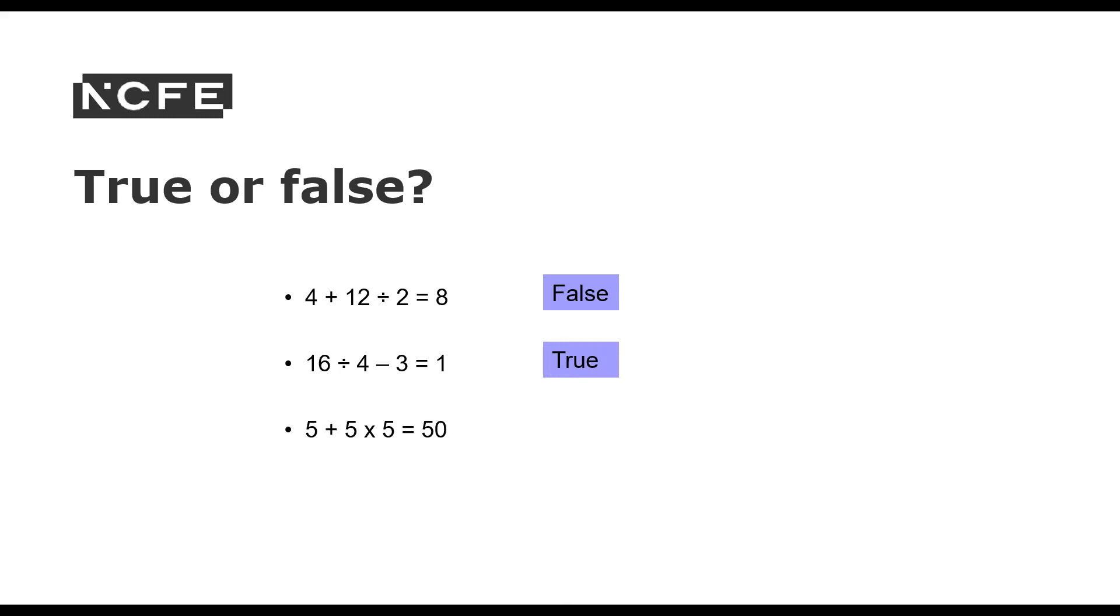5 plus 5 times 5 equals 50. Is that true or false? And I'll reveal the answer. It's false. So we do the multiplication first. 5 times 5 is 25 plus 5 is 30. So that one's false.